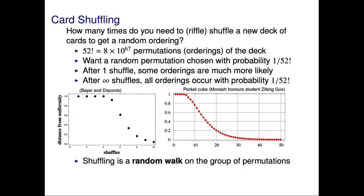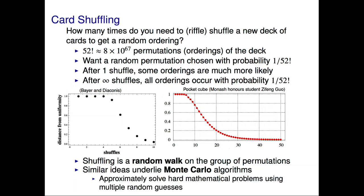Mathematically speaking, shuffling is what we call a random walk on the group of permutations of the card orderings. Very similar ideas underlie what we call Monte Carlo algorithms. These algorithms are named after the famous casino in Monte Carlo because they're inherently based on randomness — they approximately solve hard mathematical problems using multiple random guesses. The number of shuffles required to mix a deck of cards is directly analogous to determining how many iterations a Monte Carlo algorithm needs to produce an accurate approximation. Monte Carlo algorithms are one of the most powerful and commonly used computational methods in a wide variety of applications, including science, engineering, and economics. And perhaps surprisingly, ideas used to study card shuffling can also be applied to study Monte Carlo algorithms.